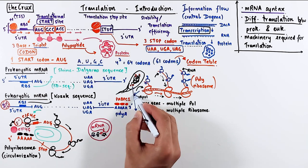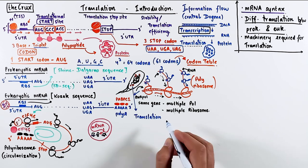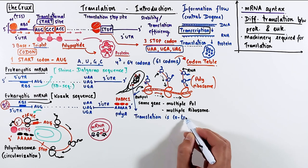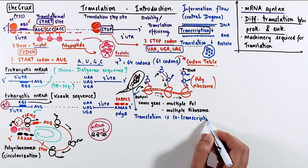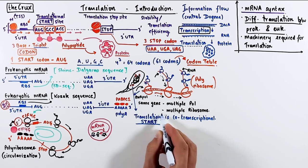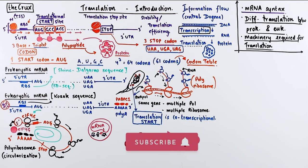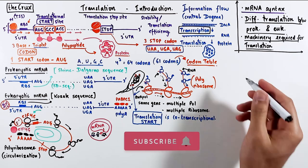All these things about polyribosomes and lack of organelles in prokaryotes reveal a very significant fact about prokaryotes, which is that translation initiation in prokaryotes occurs co-transcriptionally. Hopefully, now you have a basic understanding of the mRNA syntax and how the process of translation differs between prokaryotes and eukaryotes, which brings us to the last point of the machinery involved in the translation process itself.